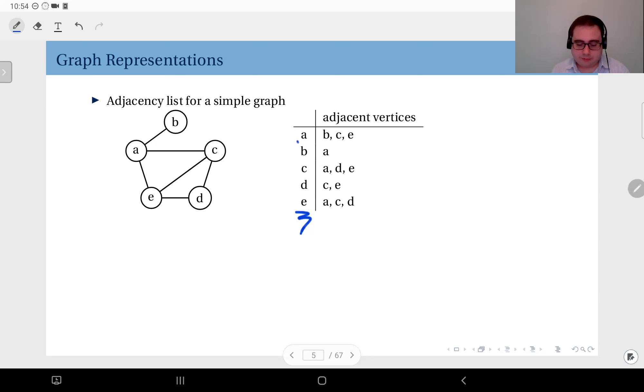For instance, with vertex a you have the list b, c, e because a is neighbors with b, with c, and with e. Vertex b is only adjacent to a. When you look at c, c is adjacent to a, d, and e, so that is listed here. Vertex d is neighbors with c and e, and finally e is neighbors with a, c, and d.